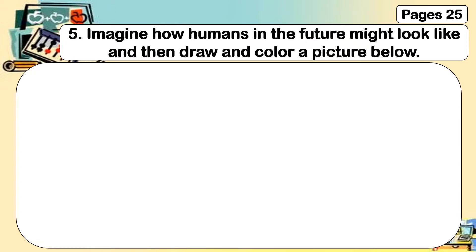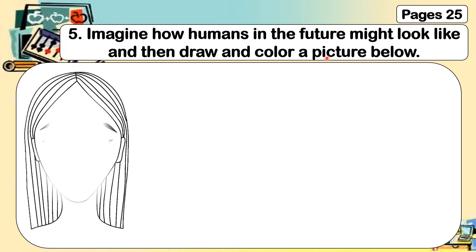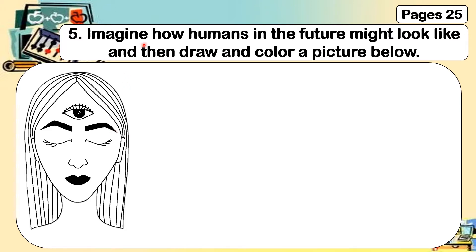Now, on page 25, number five: imagine how humans in the future might look like, and then draw and color a picture below. For example, in the future, the human might look like having a third eye. Here is an example of a drawing of how you imagine humans might look like in the future.